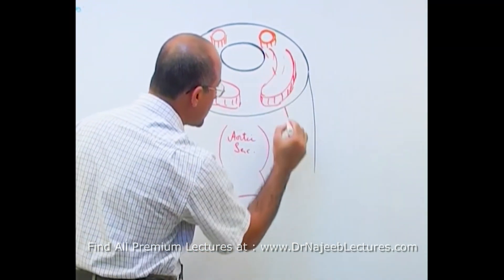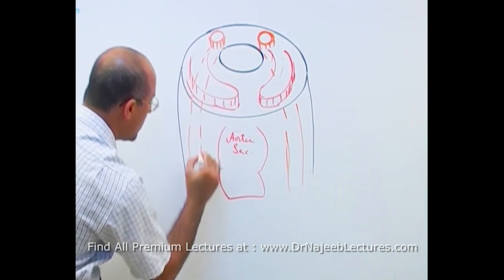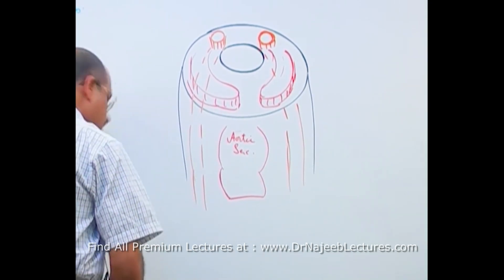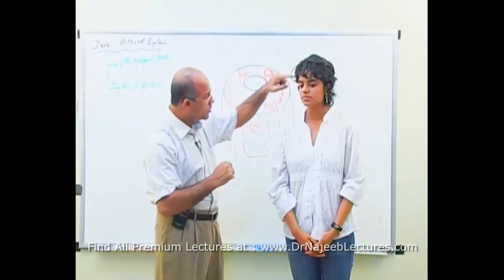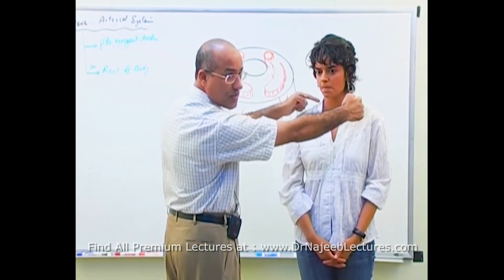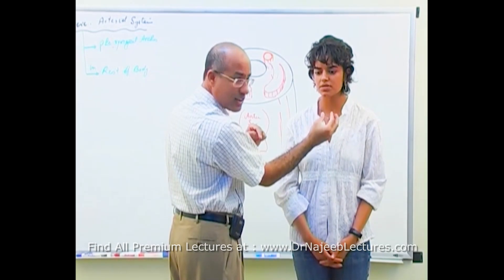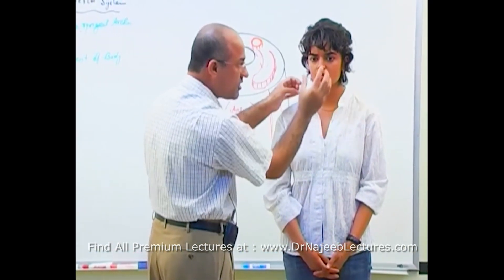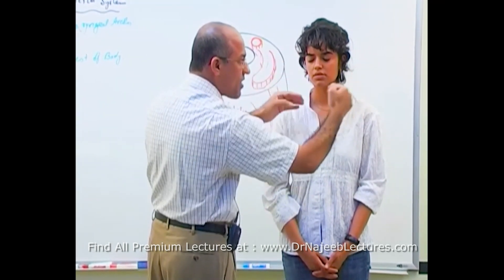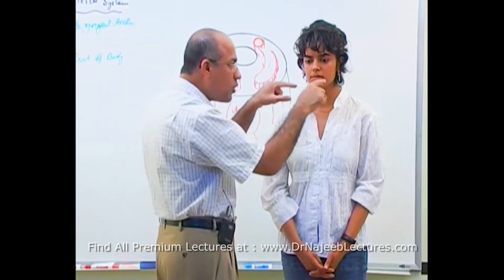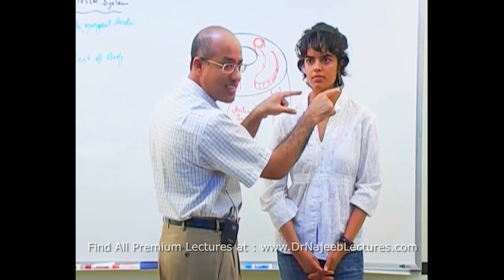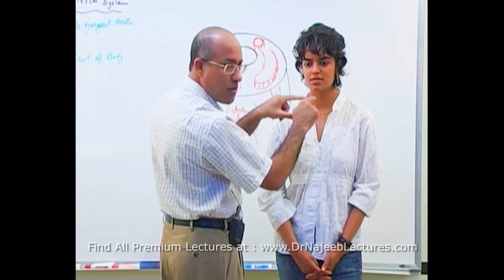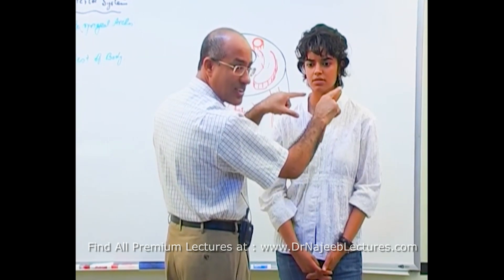So what we have is: dorsal aortae running on the back, truncus arteriosus below, and above that the aortic sac. From the aortic sac, blood vessels sprout out — through the process of angiogenesis — infiltrate into each pharyngeal arch, and go back to fuse with the dorsal aortae.